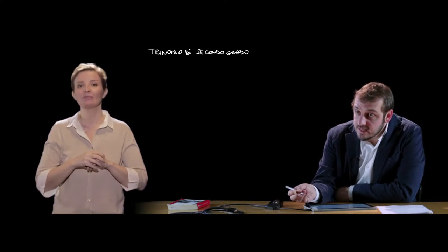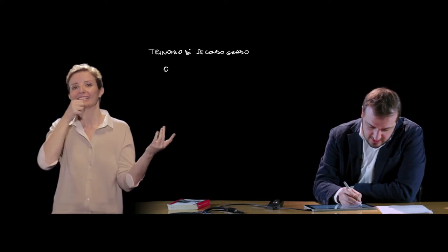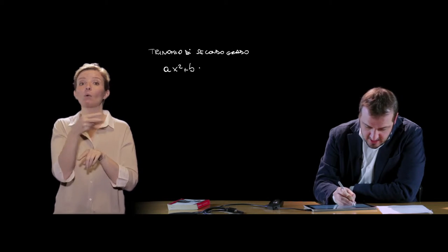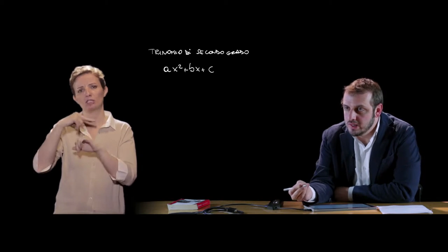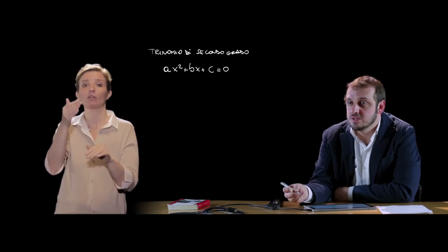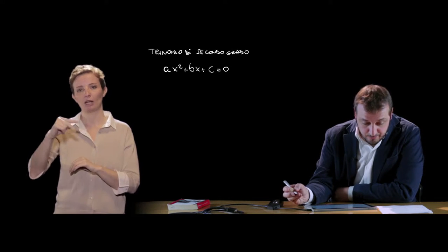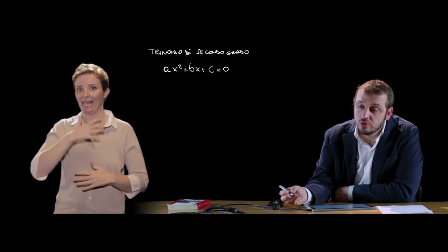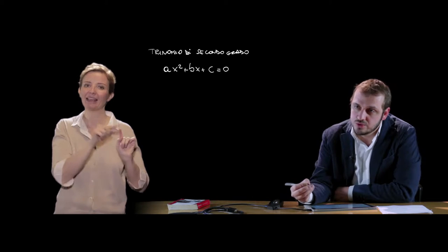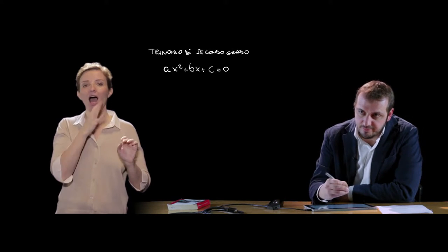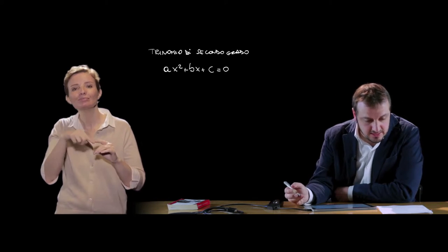Per studiare il segno di un trinomio di secondo grado dobbiamo ricorrere a quella che è definita equazione omogenea associata alla disequazione di secondo grado. Quindi prendiamo la nostra disequazione di secondo grado e la trasformiamo in un'equazione di secondo grado. Questo ci è utile perché analizzando l'equazione possiamo studiare il delta e ricavare le eventuali soluzioni dell'equazione omogenea associata, dopodiché vedremo come trasformare il tutto nel segno del trinomio di secondo grado.